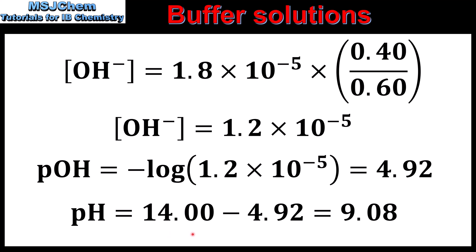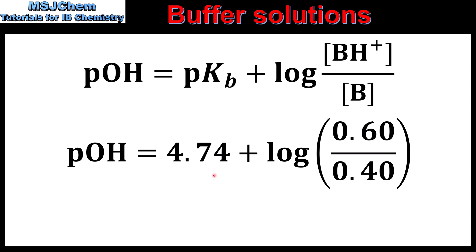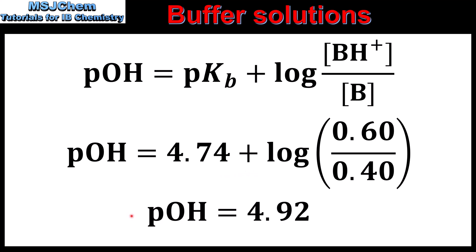Using the Henderson-Hasselbalch equation: pOH = pKb + log([conjugate acid]/[base]) = 4.74 + log(0.6/0.4) = 4.92. Subtracting from 14 gives pH = 9.08 — the same answer as before. You can use whichever method you find easiest.